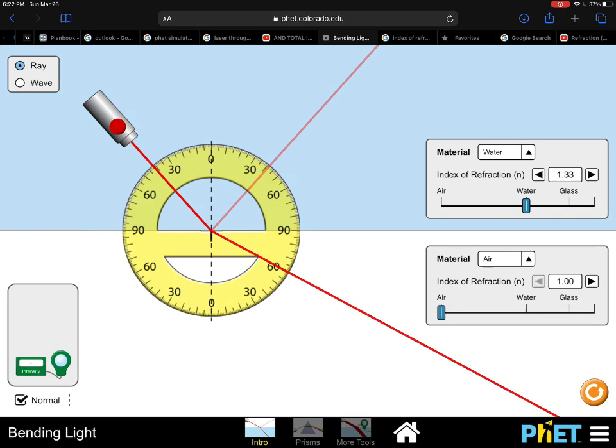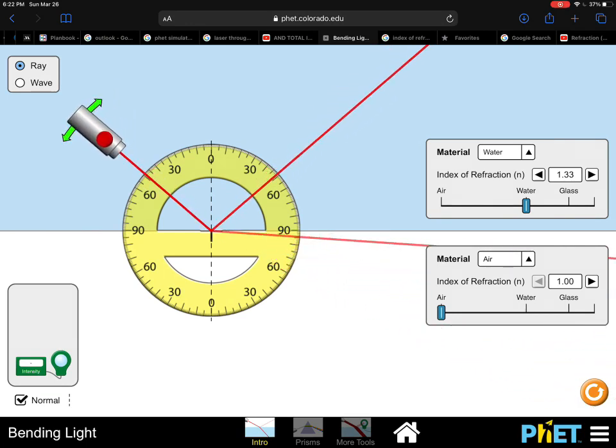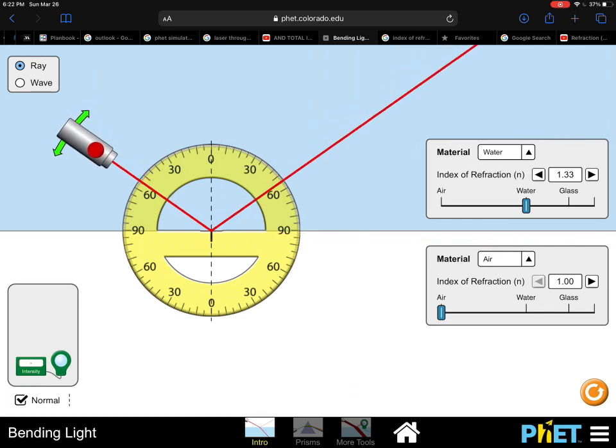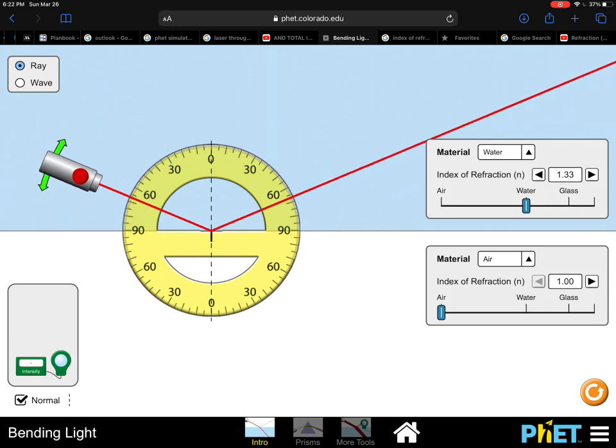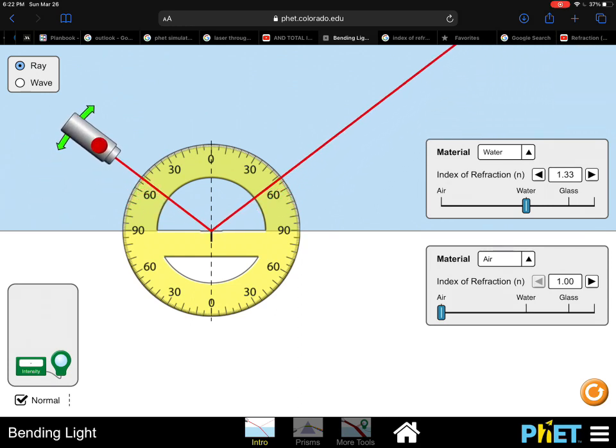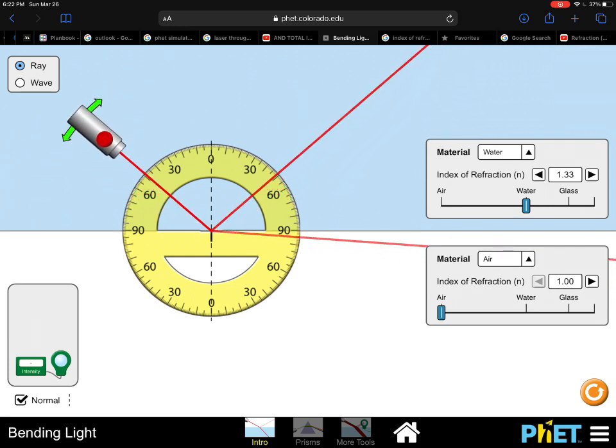Here is an example of the critical angle. As we get closer to 48.6 degrees, you can see the line starts to get close and reflects along the 90 degrees of the inside water.